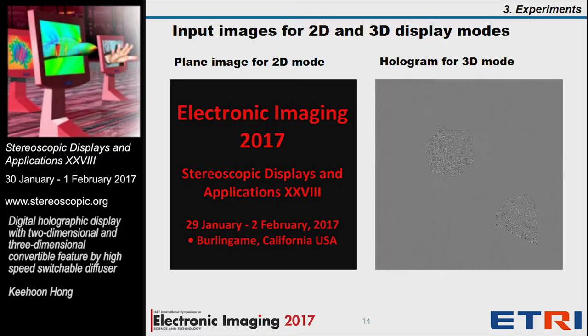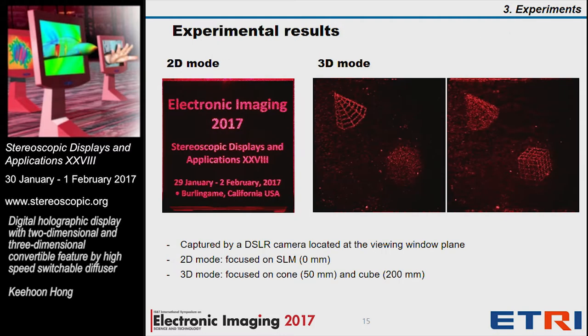The depth and texture information is calculated by the equation from the previous slide. This is the calculated hologram by CGH to test the 3D mode of our proposed method, and this is a 2D image to test the 2D display mode. The result for 2D is properly displayed, the same as the input image. The 3D hologram is also verified by two captured images with different focus: one focused on the cube and one focused on the cone.